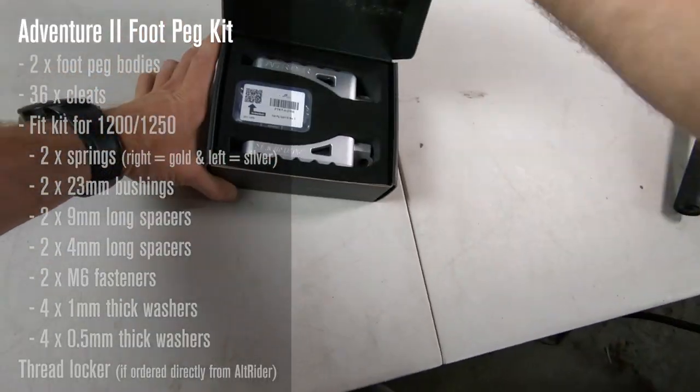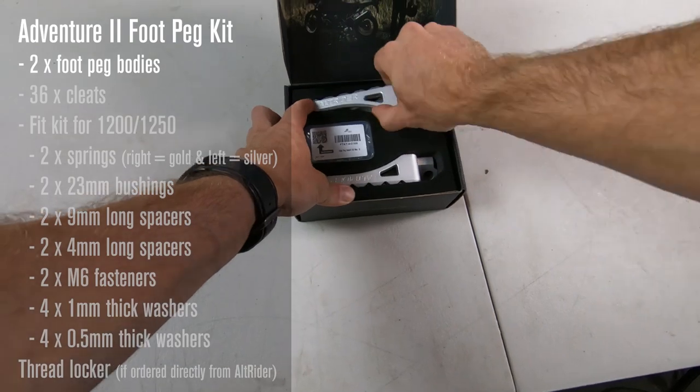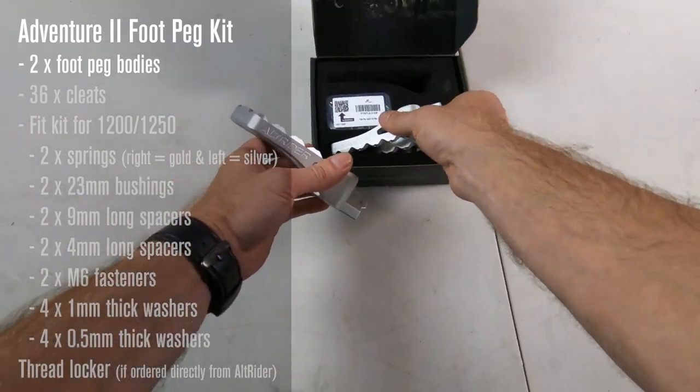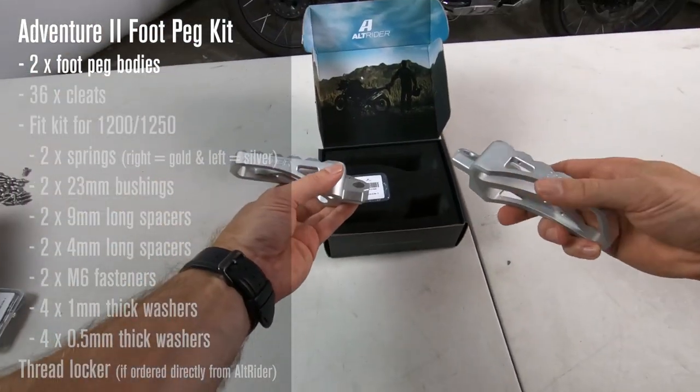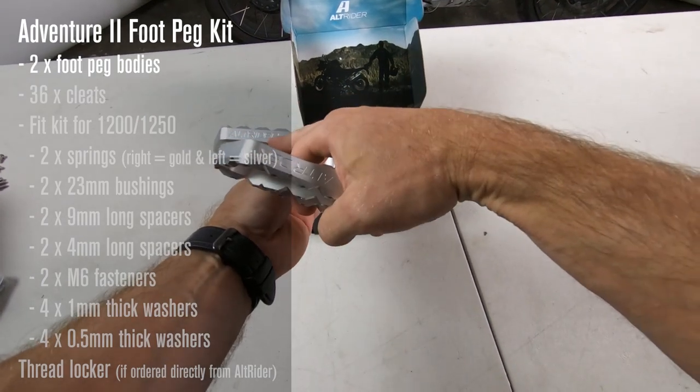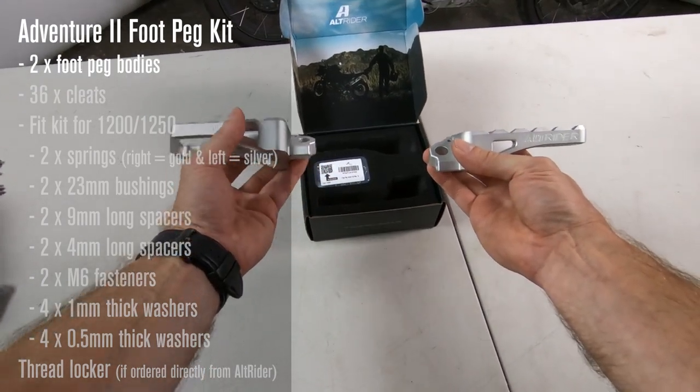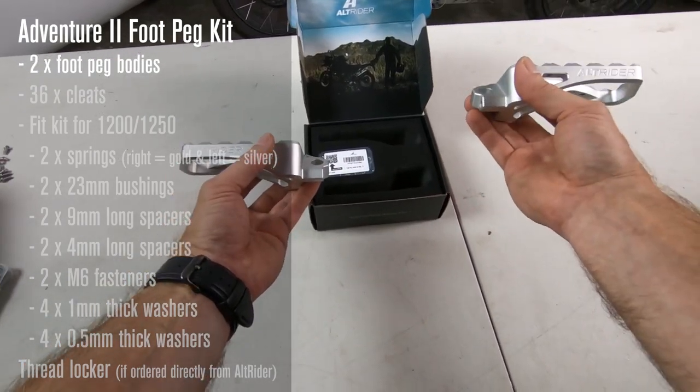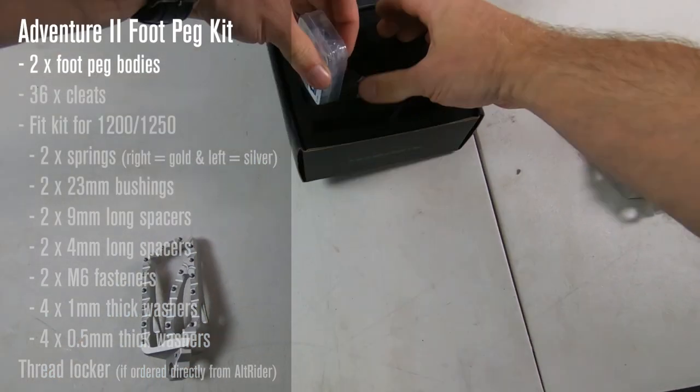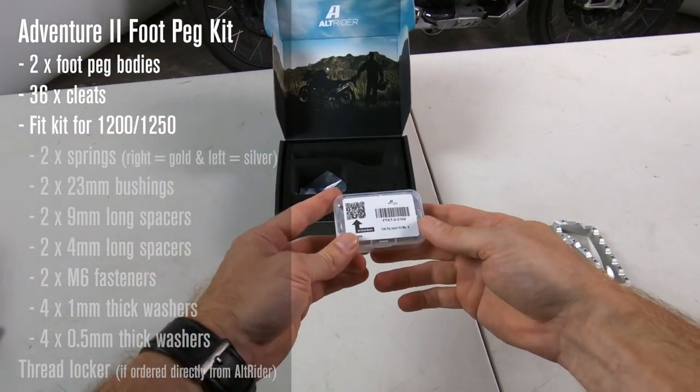So when you get your Adventure 2 pegs, they come with two pegs, right and left side obviously. You can tell the front because of the engraved AltRider. This is the rider's right-hand side and this is the rider's left side. It comes with a fit kit with all the hardware you need.